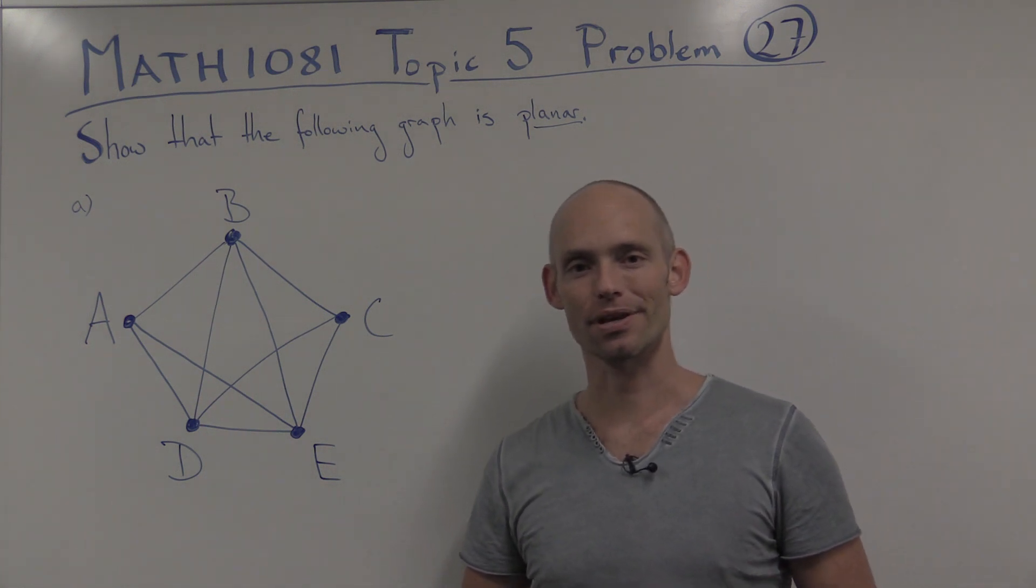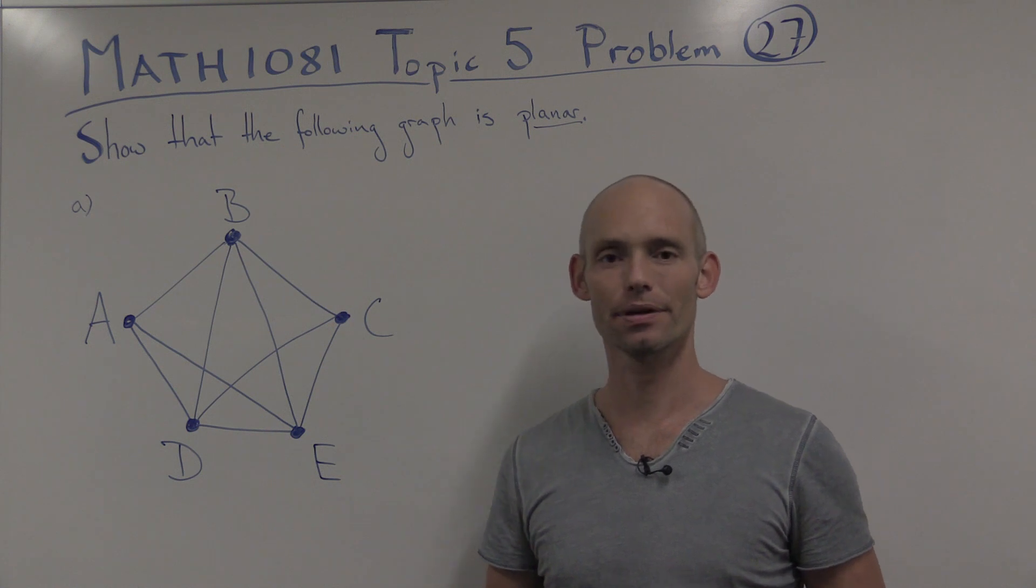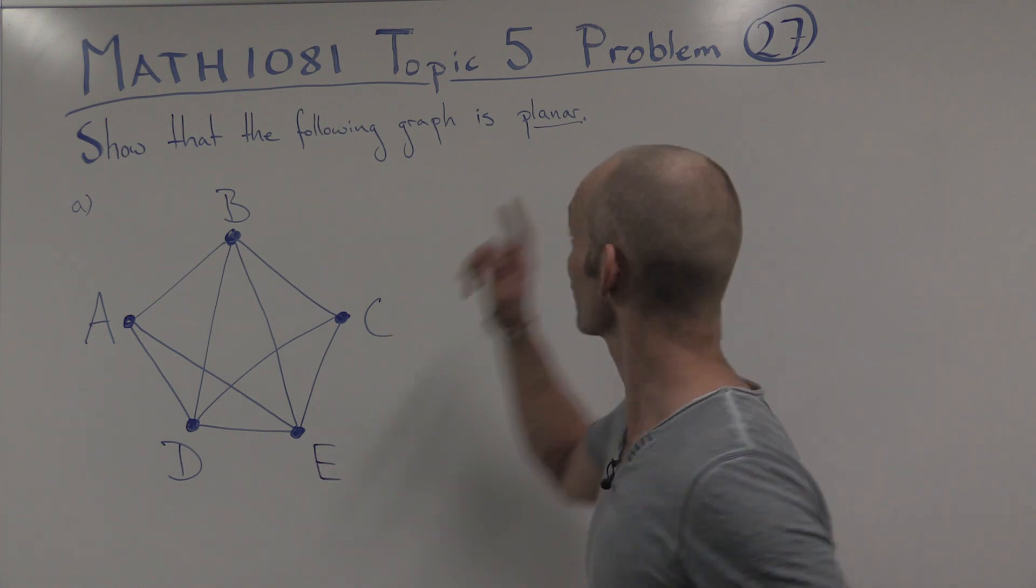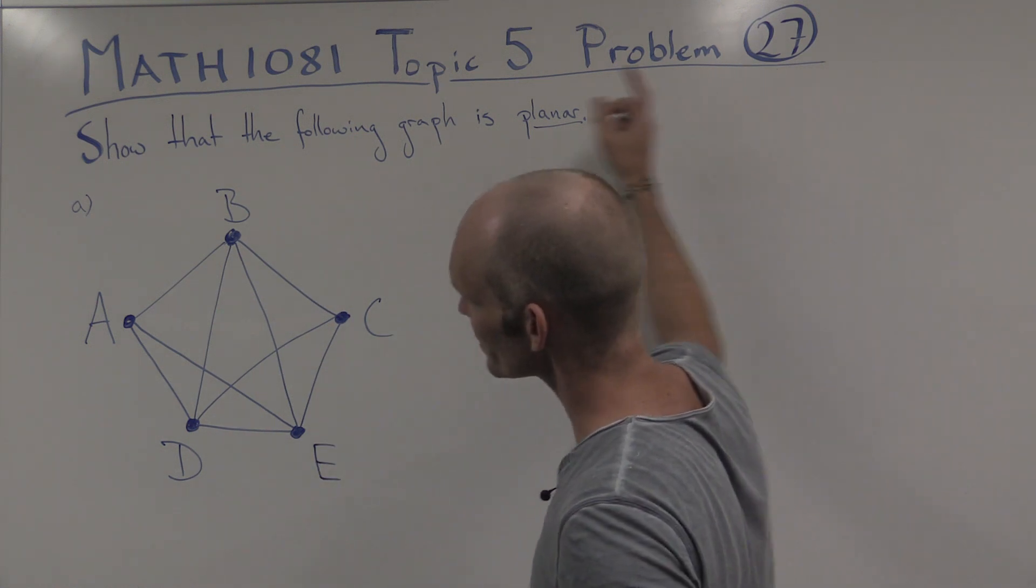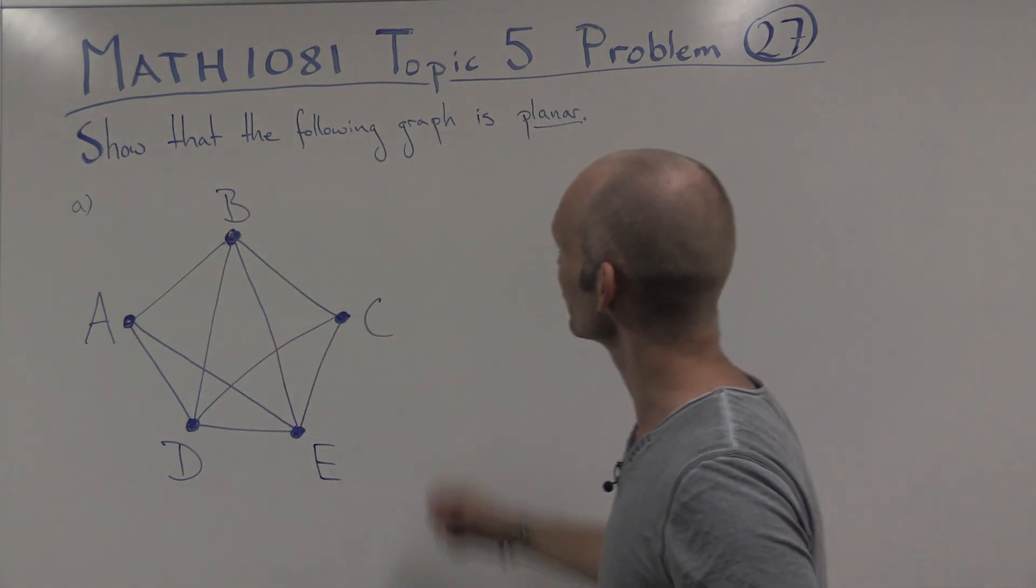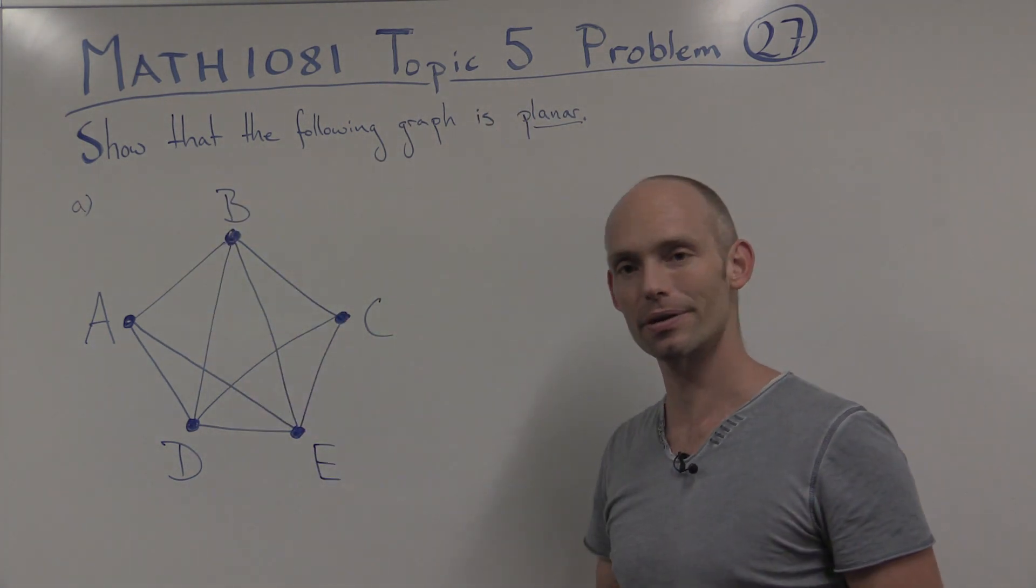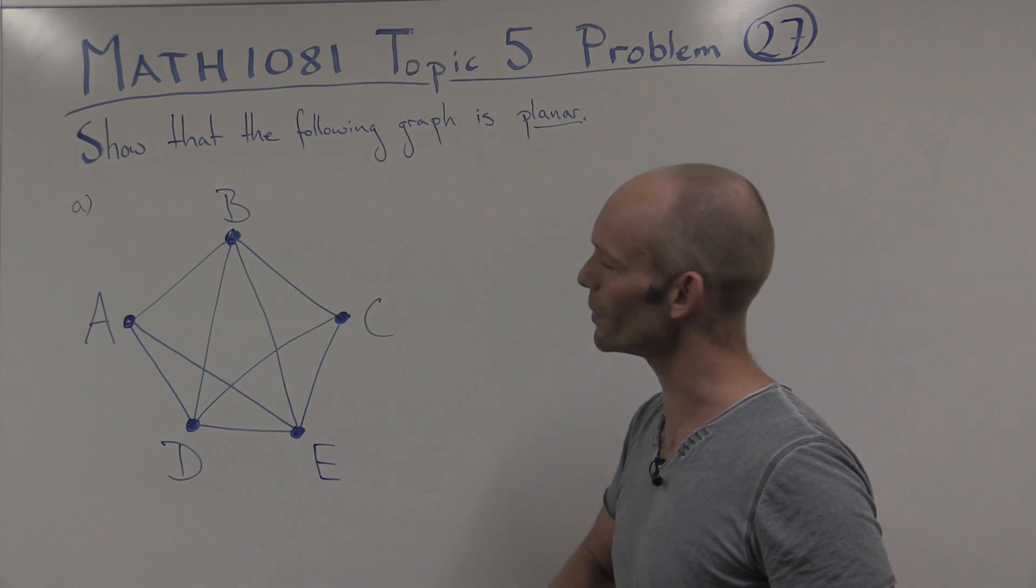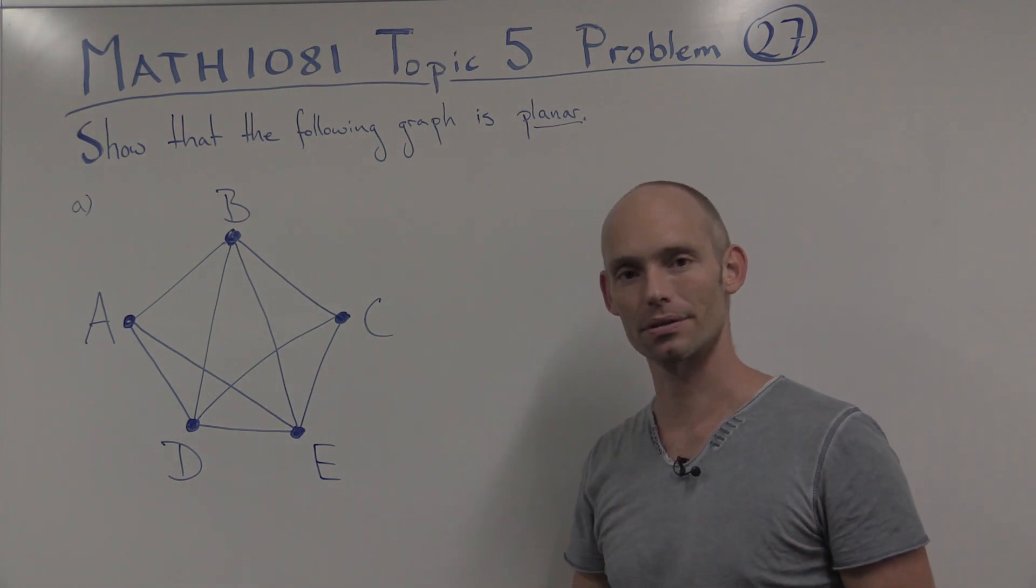Hi. We're at the University of New South Wales, in particular at the School of Mathematics and Statistics. My name is Thomas Britz, and I'm going to be looking at Problem 27, Part A of Topic 5, which is about graph theory in the course Math 1081, which is discrete mathematics.